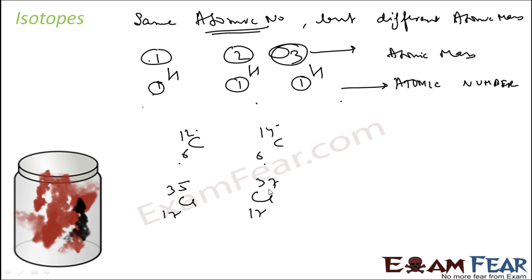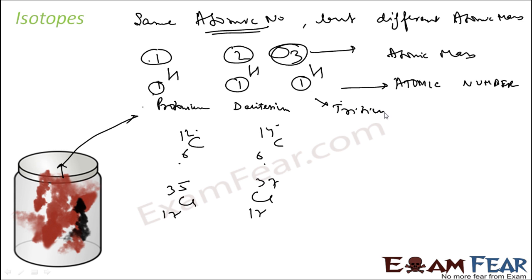Please note that if you take some hydrogen in a jar, it will have some concentration of protium, some concentration of deuterium, and some concentration of tritium. It may be 30 percent, 40 percent, 10 percent — it can be any percentage. Similarly, if you take carbon from nature, it will have some percentage of carbon-12 and some percentage of carbon-14.